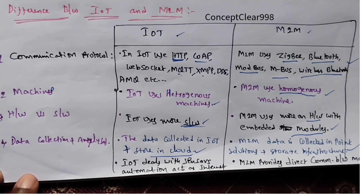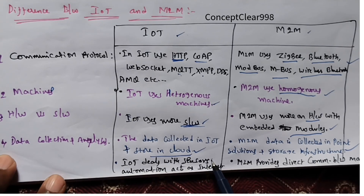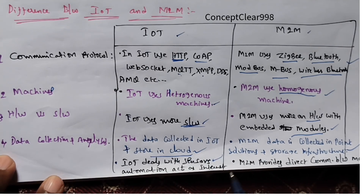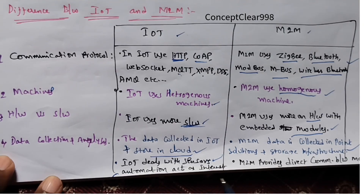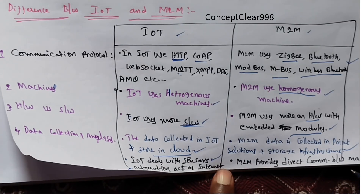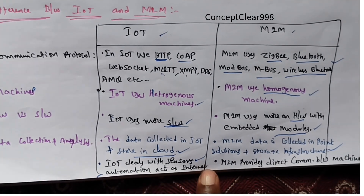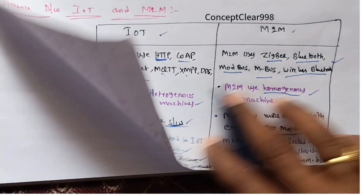The fifth aspect is the role each plays. IoT deals with sensors, automation, and acts as the internet of connected things. M2M provides direct communication between machines.